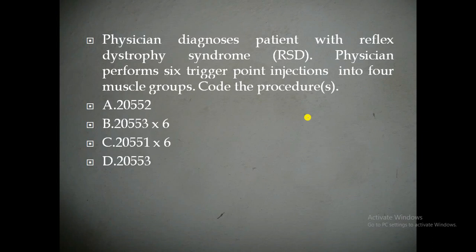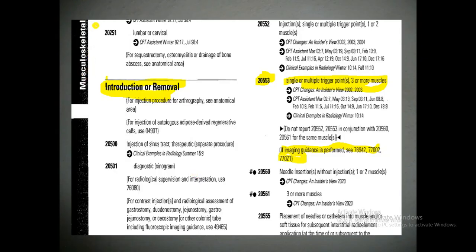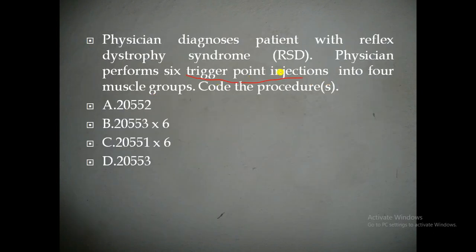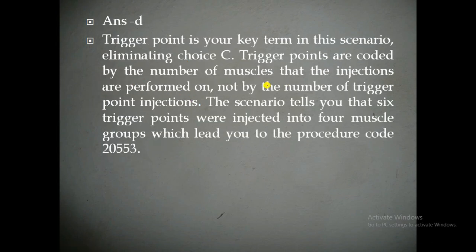So how to find the CPT code? If we go to the CPT book, musculoskeletal system section, under the introduction or removal section, we can see the trigger point injections. The key point here is that the code is selected based on the number of muscles injected, but not on the number of trigger points. So we have to select the CPT code based on how many muscle groups the physician is giving injections, not by the trigger point count.